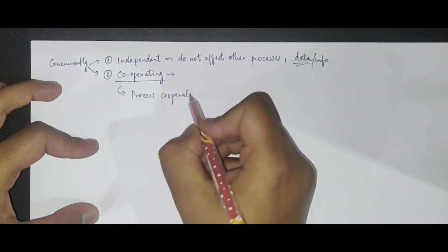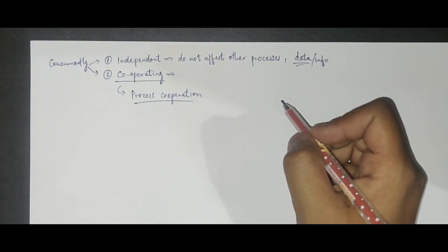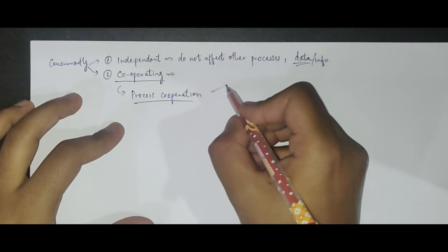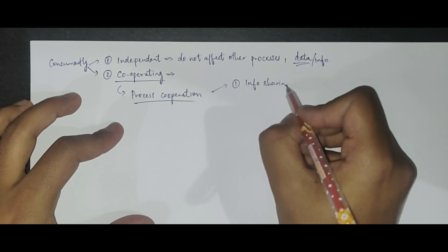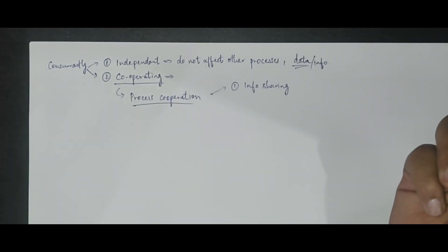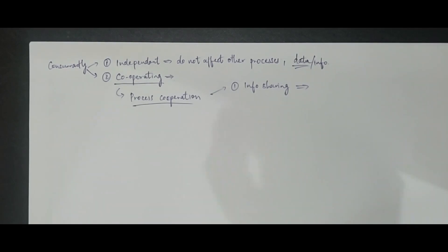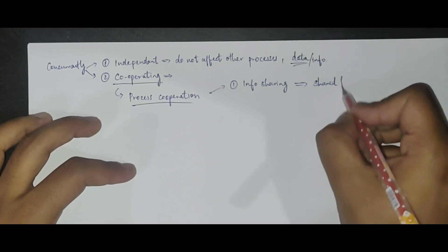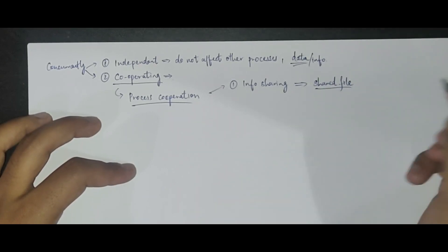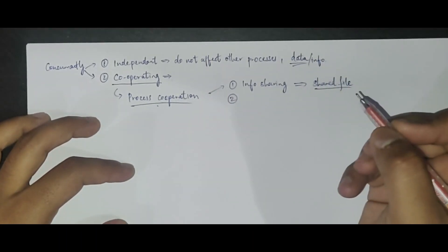There might be multiple reasons why process cooperation is necessary. One case is information sharing — for example, multiple users want to access the same resource or the same piece of information. If users want to access a shared file, then there must be some kind of cooperation between them.